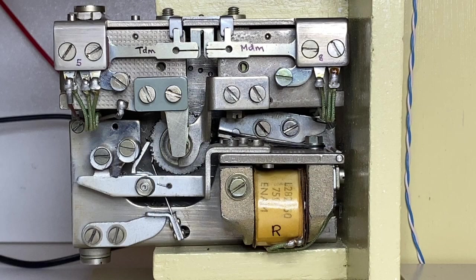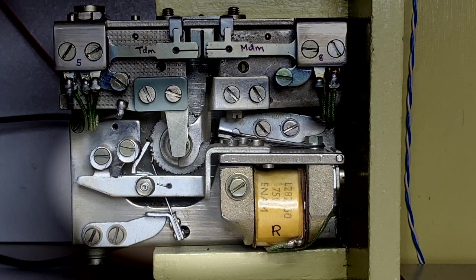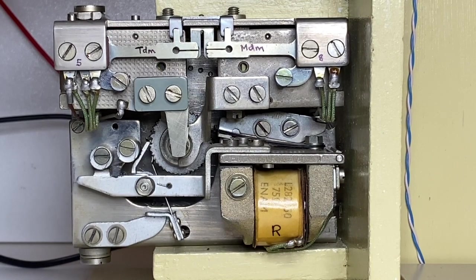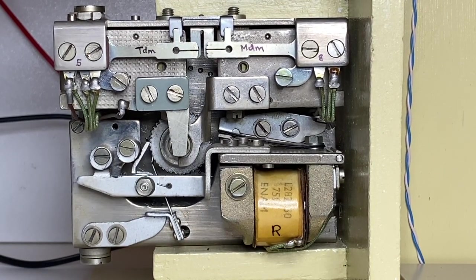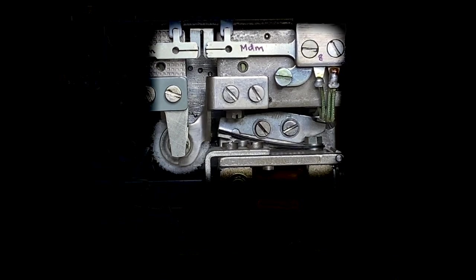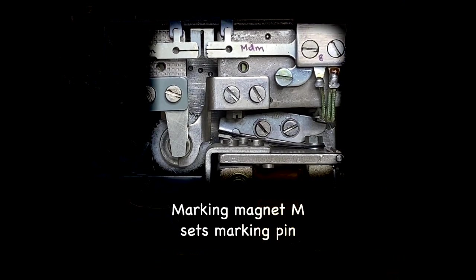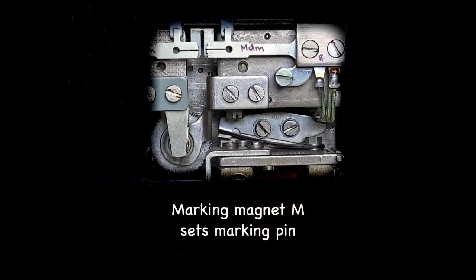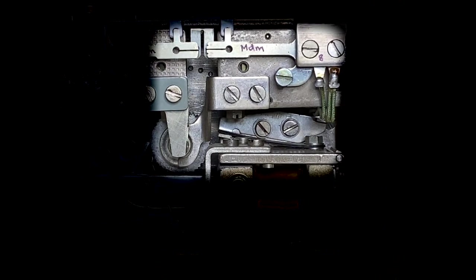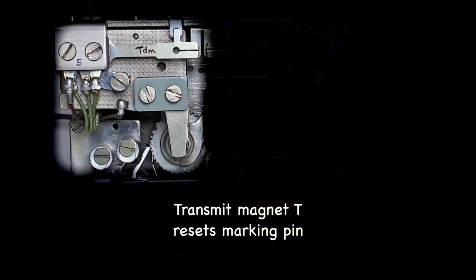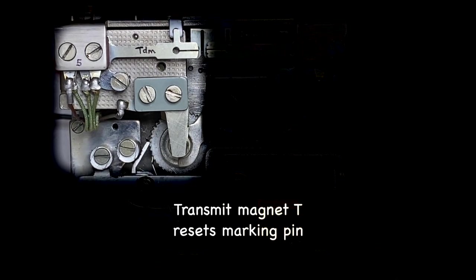On the right side of the regenerator we have a ratchet wheel that follows the pulses on the incoming line. Magnet M sets the marking pin where the ratchet wheel stops. Here you see that magnet being activated. There is also a contact MDM at the top that opens when the magnet operates. Magnet T resets the marking pin which allows the pulsing wheel to rotate to the next pin. Here you also see contact TDM that opens when the magnet operates.